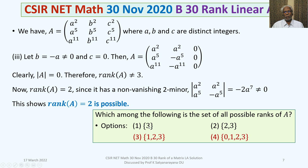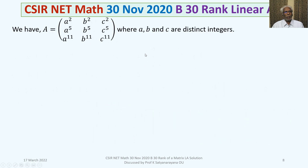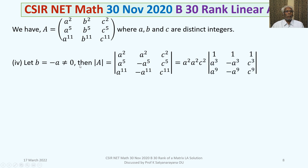Now let us check whether rank of A = 3 is possible. Keep B = −A ≠ 0 and leave C unspecified. The determinant of A, after taking A² common from column 1, A² from column 2, and C² from column 3, becomes A⁴·C² times the determinant of the matrix with rows (1, A³, A⁹), (1, −A³, −A⁹), (1, C³, C⁹).